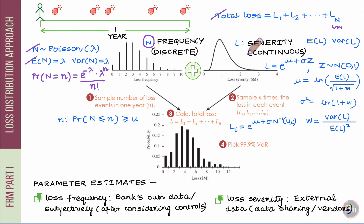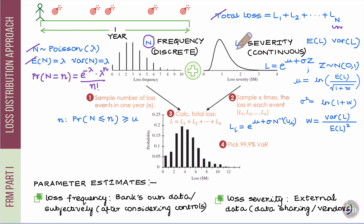Now let's pick an appropriate distribution for capital L, which denotes the severity of any given loss. Severity is a continuous random variable, whereas capital N was discrete. For capital L, I will pick the log-normal distribution. When it comes to operational risk losses, distributions tend to be asymmetric, and the log-normal distribution is indeed asymmetric with a prominent right tail — a property that is quite appropriate when modeling operational risk losses. So the log-normal distribution is a pretty appropriate choice.